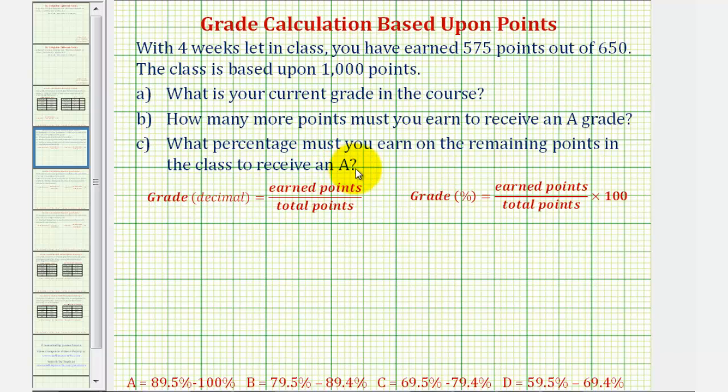Because a percent is a number compared to 100, to find the current grade in the course, we're going to form a fraction using the earned points and total points, and then multiply by 100 to convert to a percentage. We're really finding the fraction earned of 100 to find the percent.